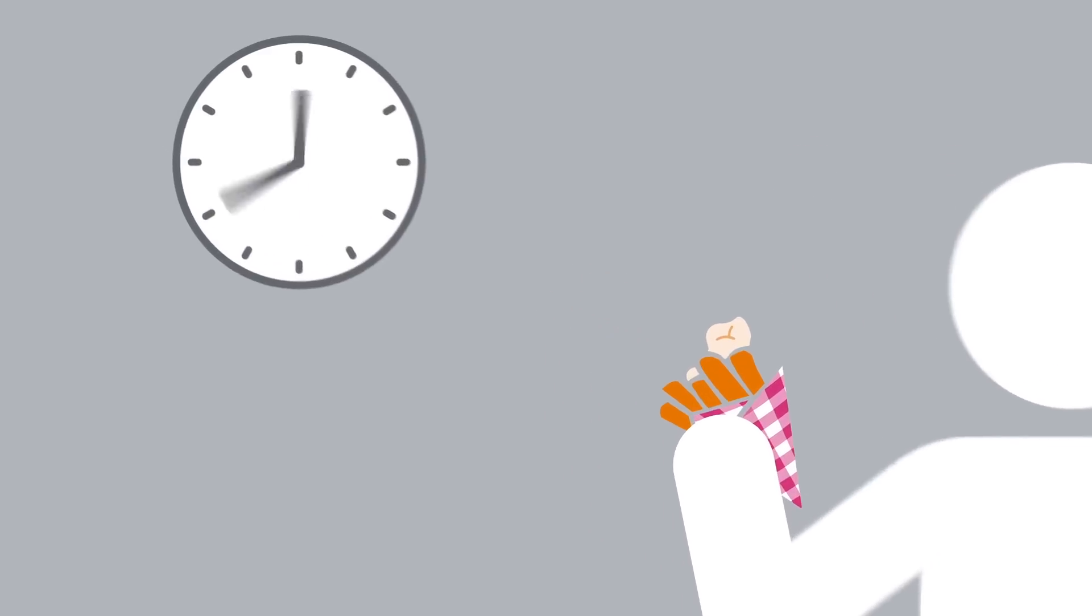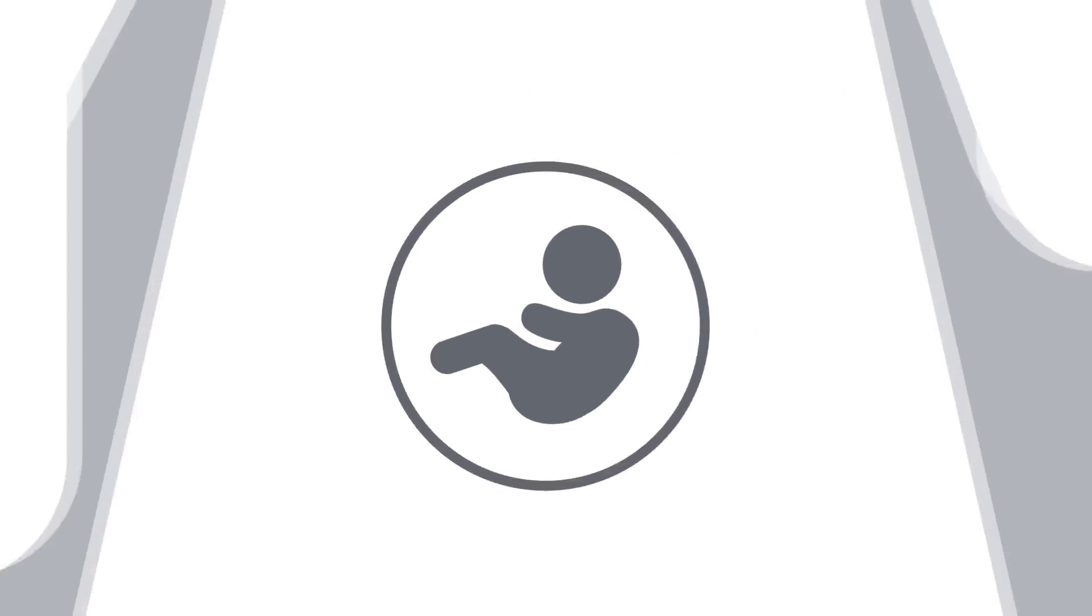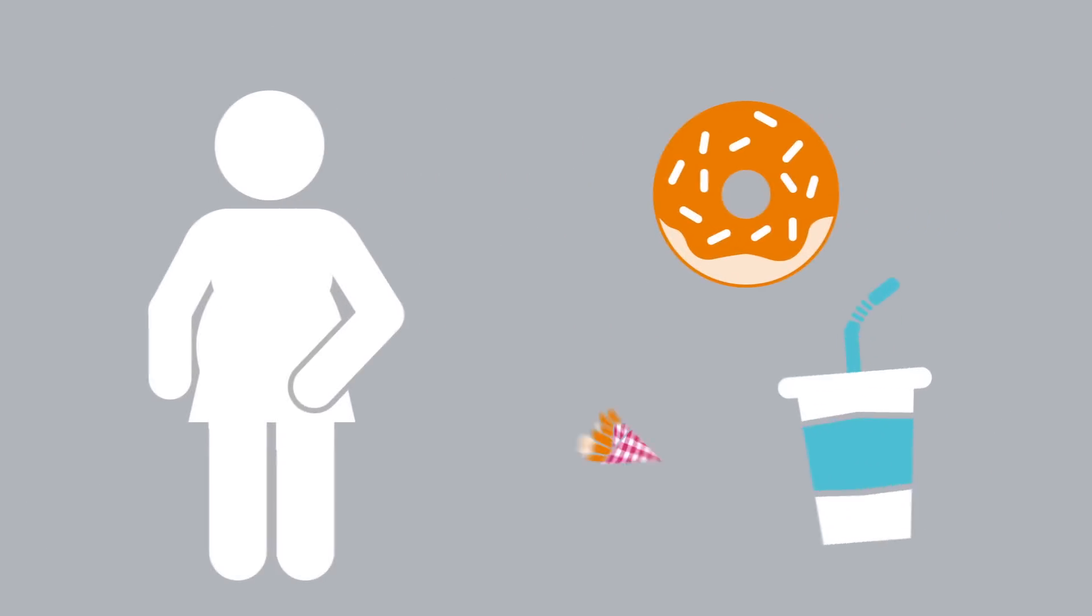This risk starts before we are even born. When pregnant women consume unhealthy foods containing excess amounts of sugar and fat, they are more likely to have overweight children and develop associated health problems.